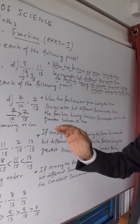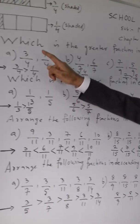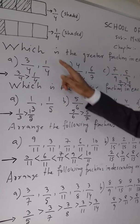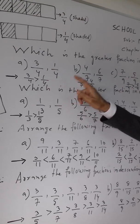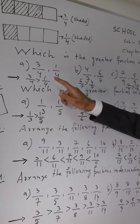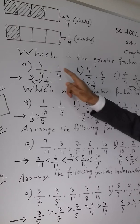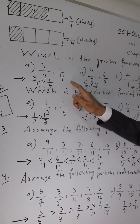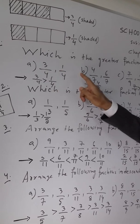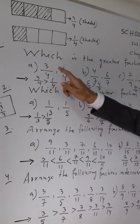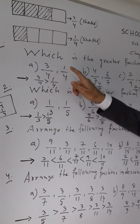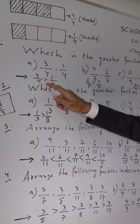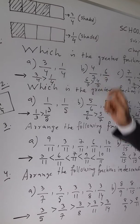Now we will concentrate again. 3 by 4 and 1 by 4 — which one is greater? Both fractions have the same denominator, so you must compare the numerator. 3 is greater than 1, therefore 3 by 4 is greater than 1 by 4.